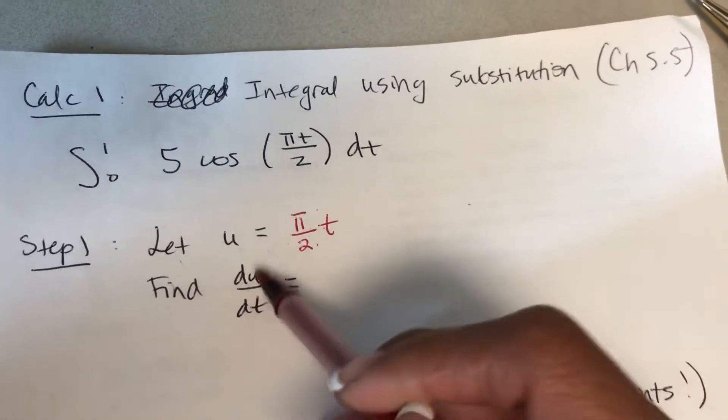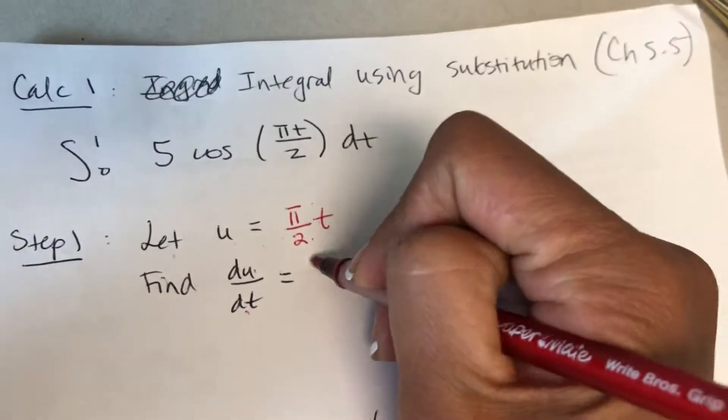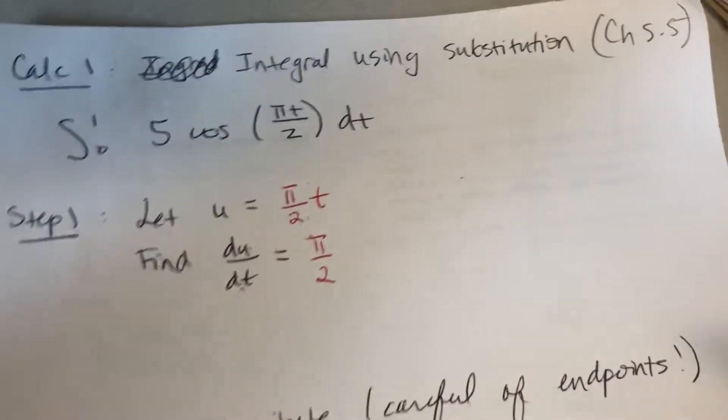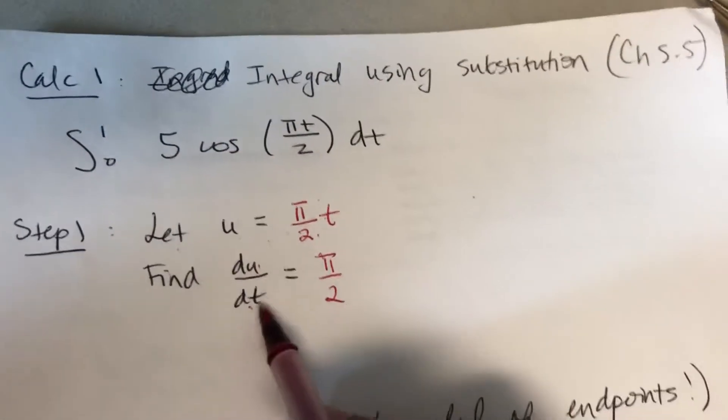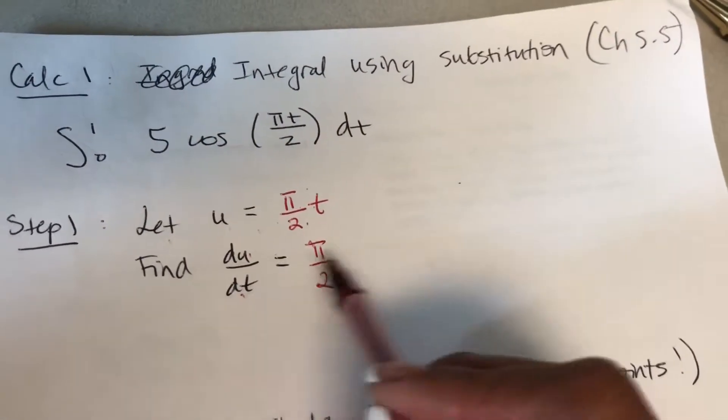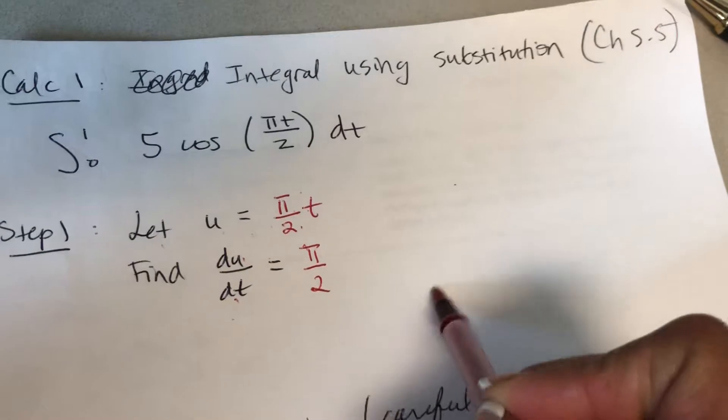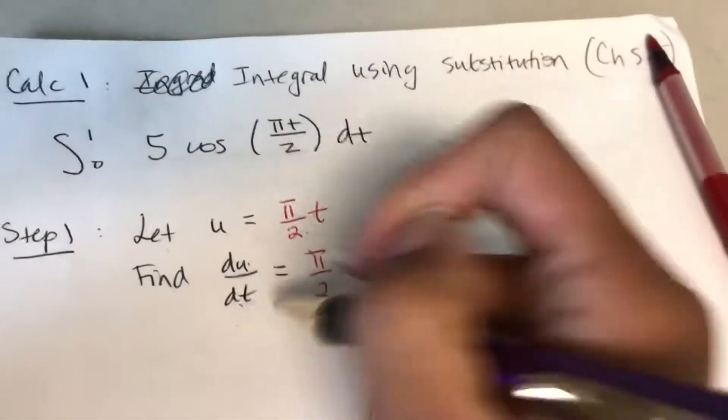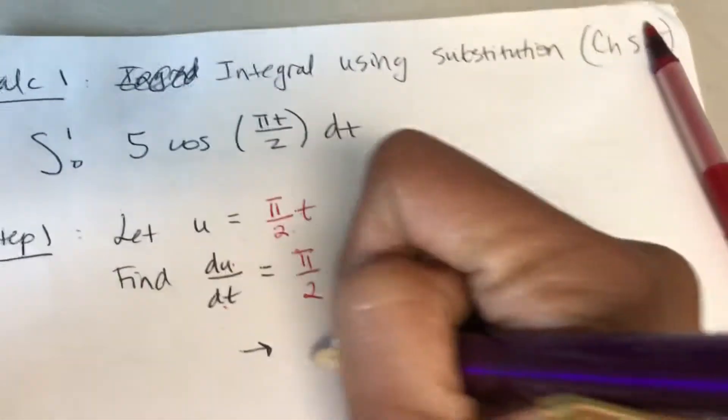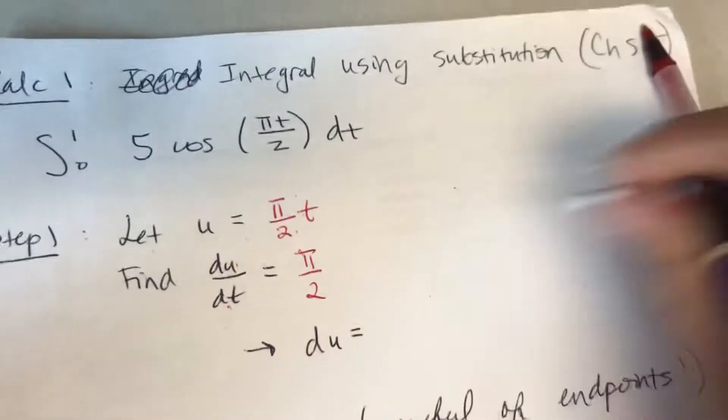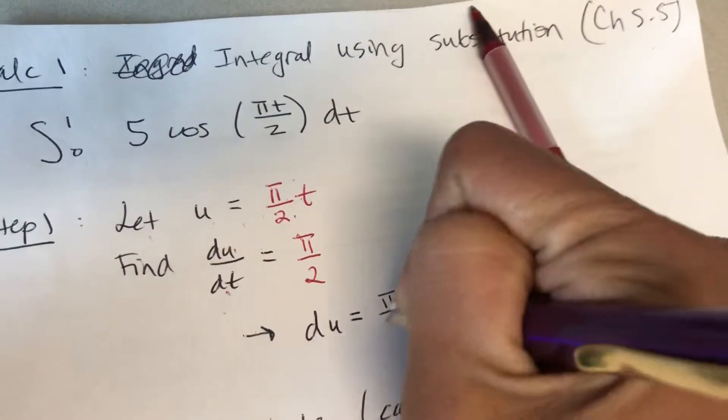The derivative of u with respect to t, du/dt, is equal to pi over 2. Once you do that, you could manipulate this to have it in terms of du or in terms of dt. Here what I'm gonna do is also say that du is equal to pi over 2 dt.